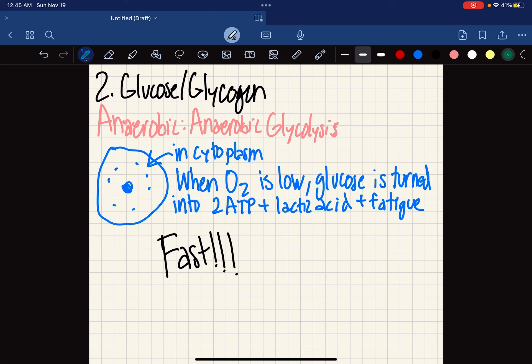When the presence of O2 is low, glucose is turned into 2 ATP plus lactic acid and fatigue. It's a very fast process, but what happens is you build up fatigue and lactic acid, so you get pretty tired once you start using this process a lot.